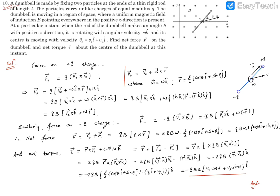Hello, here is equation number 10. It reads: a dumbbell is made by fixing two particles at the ends of a thin rigid rod of length L. The particles carry unlike charges of the same modulus Q. The dumbbell is moving in a region of space where a uniform magnetic field is pointing everywhere in the positive z direction as shown in this figure.